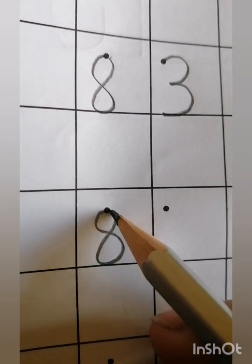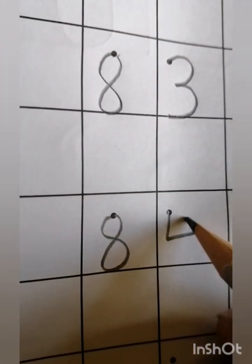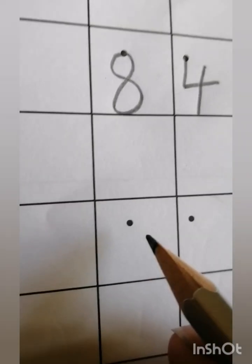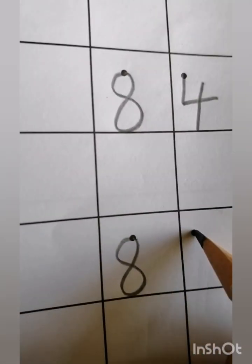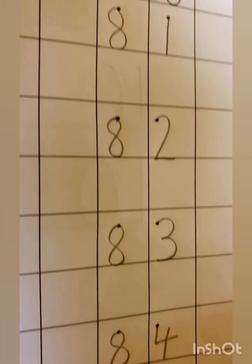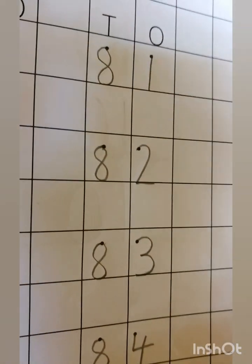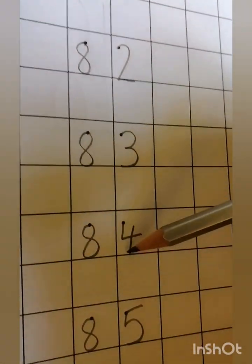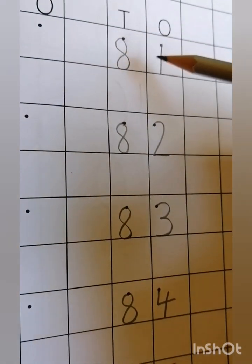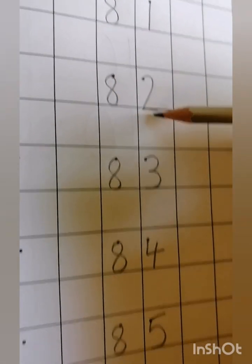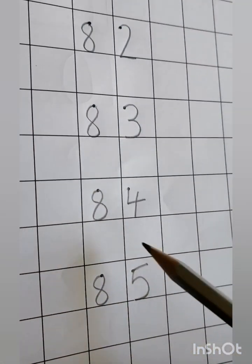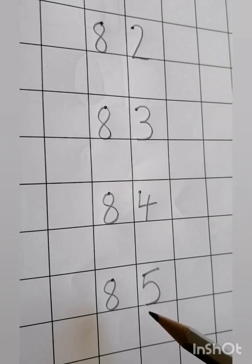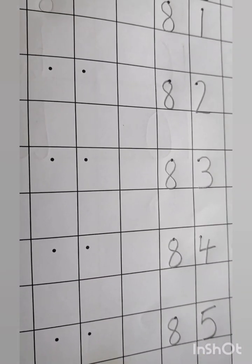Next, what comes after 82 — 8 and 3 makes 83. After that, 8 and 4 makes 84. Then last number, 8 and 5 makes 85. After the writing, sequence reading again: 81, 82, 83, 84, 85. 8 and 1 makes 81, 8 and 2 makes 82, 8 and 3 makes 83, 8 and 4 makes 84, 8 and 5 makes 85.